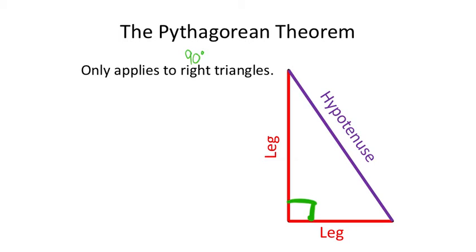The Pythagorean theorem will only apply as long as we're dealing with right triangles. In this section, I'll always refer to side lengths as legs and hypotenuse. The hypotenuse is the side opposite the right angle — I think of it kind of like it's pointing at the hypotenuse.